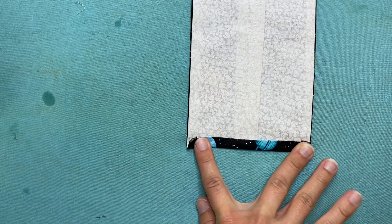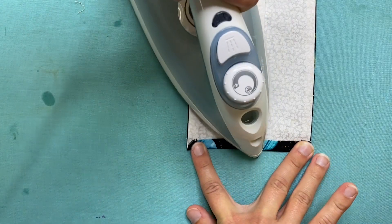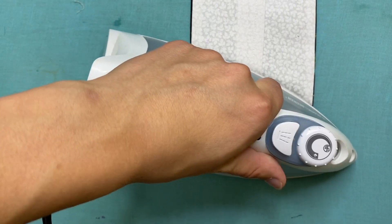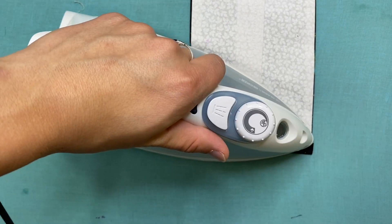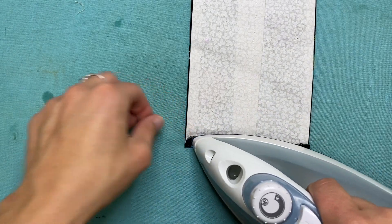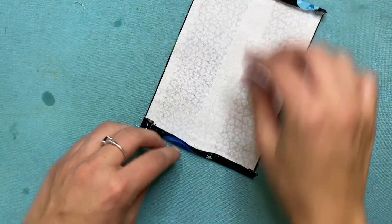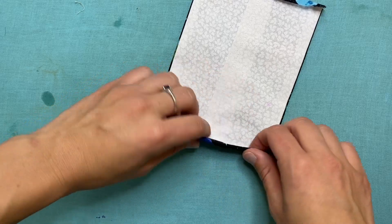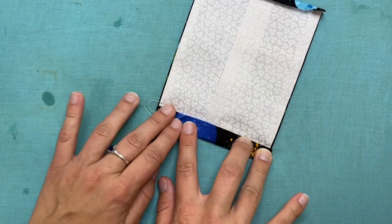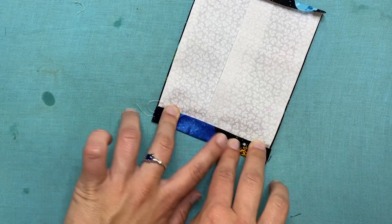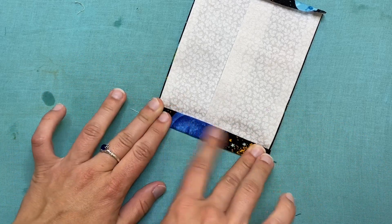I'm going to repeat for the same side with the same steps. Fold it down press it. There we go and then fold it in again. Right now we're creating the pocket where our elastic is going to go through.